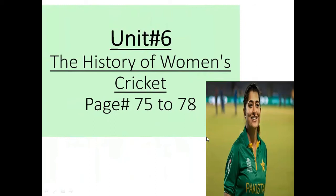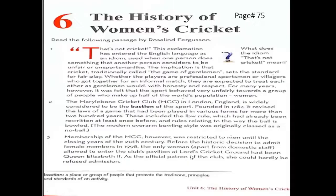Open your course book to page number 75, unit number 6: The History of Women's Cricket. Before starting this unit, I want to share some information about the writer. The writer is Rosalind Pagiasa. She was a former teacher and is a freelance writer and editor with a wide range of reference books to her name. She lived in Kent, a county in south-eastern England, with her husband David, and occupied her leisure time with walking, sailing, literature, and music.